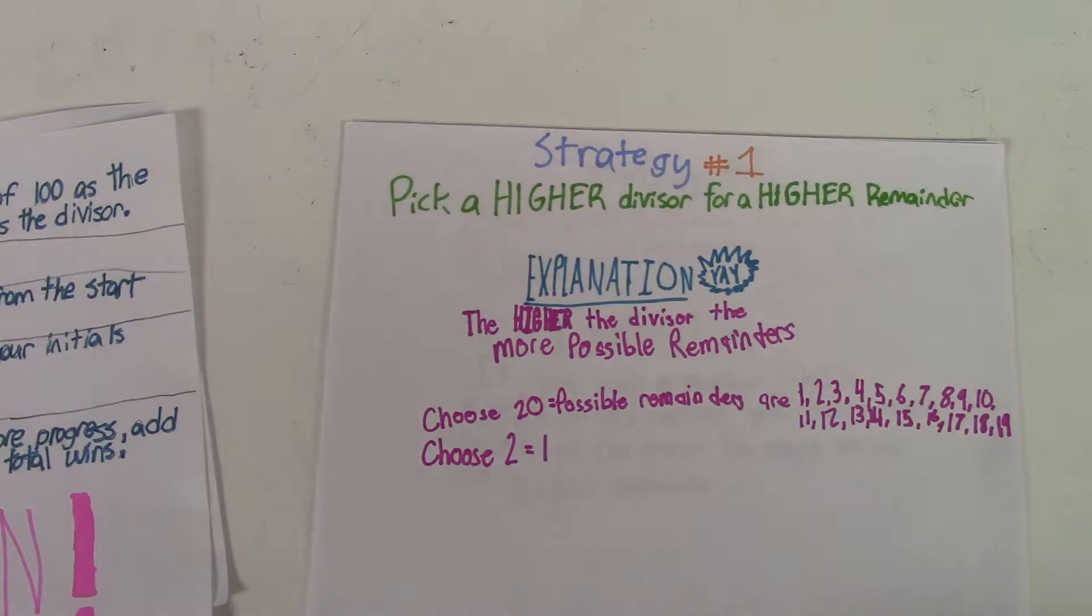The higher the divisor, the more possible remainders. If you choose 20, the highest possible remainder is 19. If you choose 2, the highest possible remainder is 1.